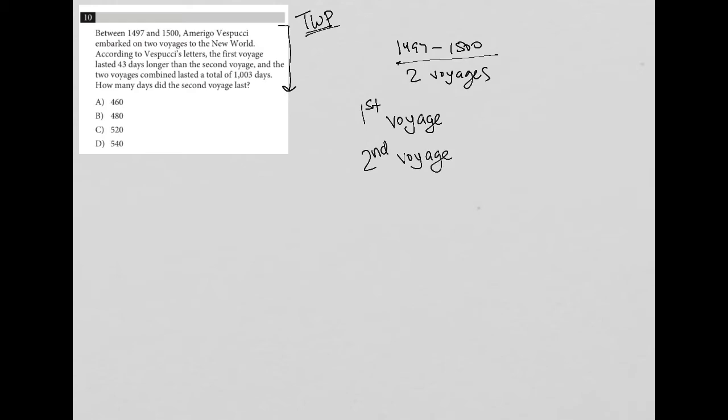The question says the first voyage lasted 43 days longer than the second voyage, meaning I don't know how long the second voyage was. But I do know that the first voyage was that length of time plus 43 days.